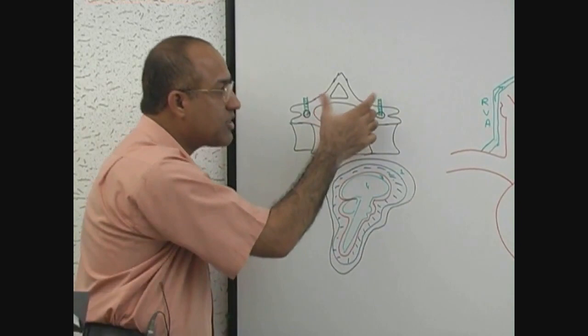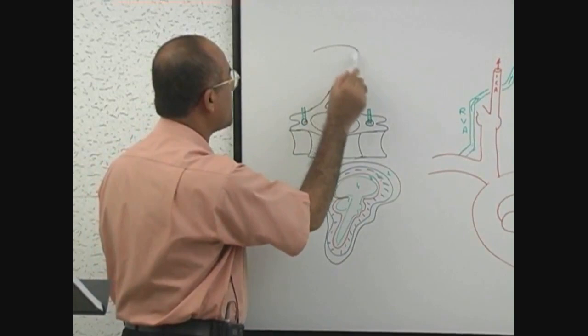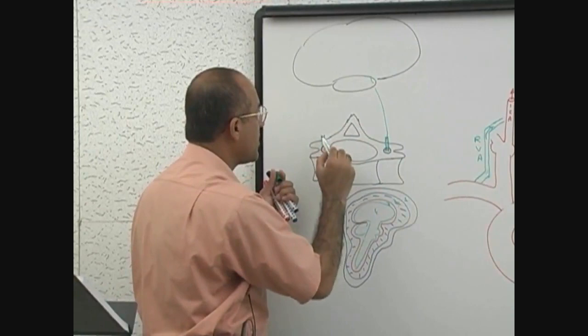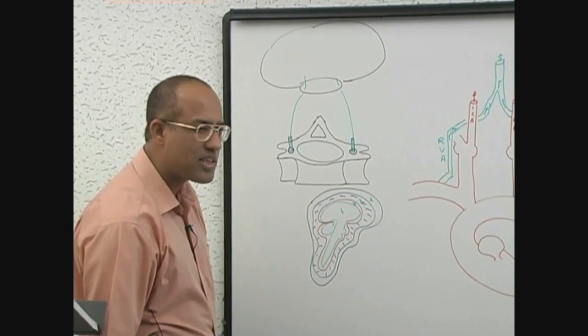And eventually they go medially. Of course there should be something called skull over here with foramen. Suppose this is the skull, this is foramen magnum. Naturally these vertebral arteries through the foramen magnum will enter into cranial cavity. Where should the major vessels be in which space? Subarachnoid space.